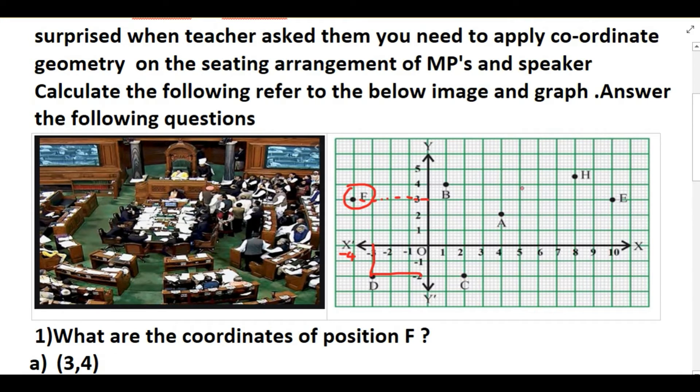So this is first quadrant. We know that a graph can be divided into four coordinates by using two perpendicular axes. One is x-axis, other is y-axis. The horizontal one is x-axis and the vertical one is y-axis. So this is the second quadrant, this is your third quadrant, this is your fourth quadrant.